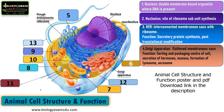Golgi apparatus is flattened membranous sacs which can be called the sorting center of the cell. The receiving region is called the cis Golgi, the central region is the median Golgi, and the dispatching center is the trans Golgi. Proteins enter into the cis region where they are further modified, packed, and dispatched as vesicles that pinch off from the Golgi. So it is the packaging and sorting center of the cell. It is also involved in secretion of hormones, mucus, formation of lysosome, and acrosome.